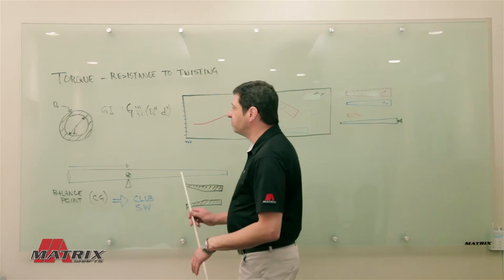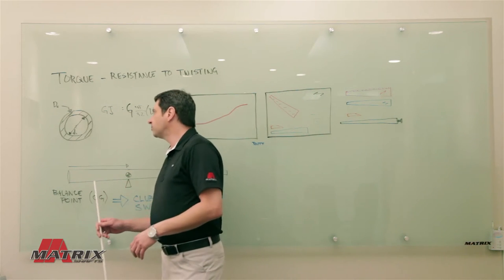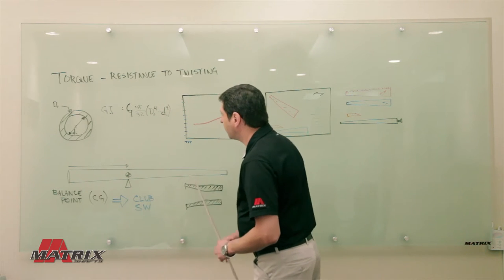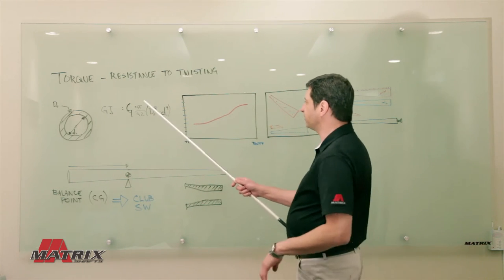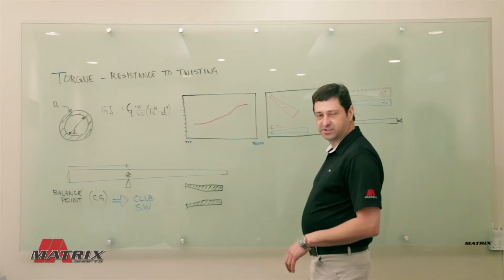Torque is probably the most misunderstood property of a shaft, and really torque is just a resistance to twisting.